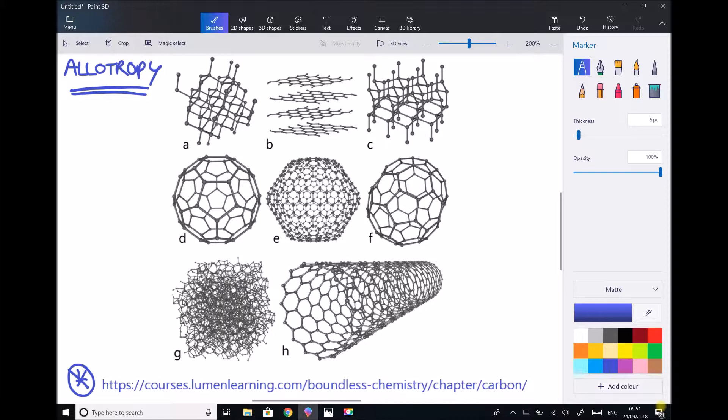In terms of the allotropes of carbon we see 8 different examples here but we're going to focus specifically on A and B as these are the most common or the most familiar forms of carbon. Structure A that we see there is diamond and structure B we see there is graphite. Some of the less common forms...